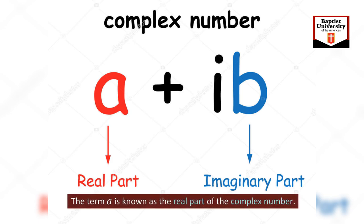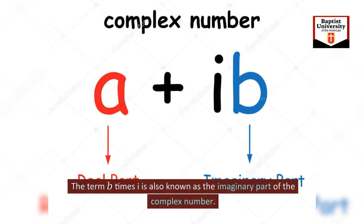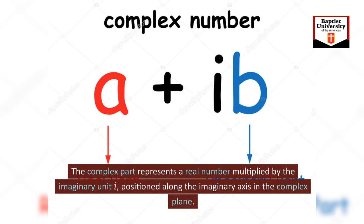The term A is known as the real part of the complex number. It represents a real number along the real axis in the complex plane. The term B times I is also known as the imaginary part of the complex number. The complex part represents a real number multiplied by the imaginary unit I positioned along the imaginary axis in the complex plane.